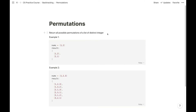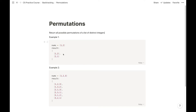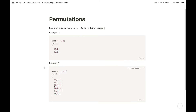For example, in the first example I have 1 and 2, and I want to return the permutations, which are just [1,2] and [2,1]. The second example [1,2,3] — all possible permutations are [1,2,3], [1,3,2], [2,1,3], [2,3,1], [3,1,2], and [3,2,1]. So these are all the possible permutations of these three numbers.